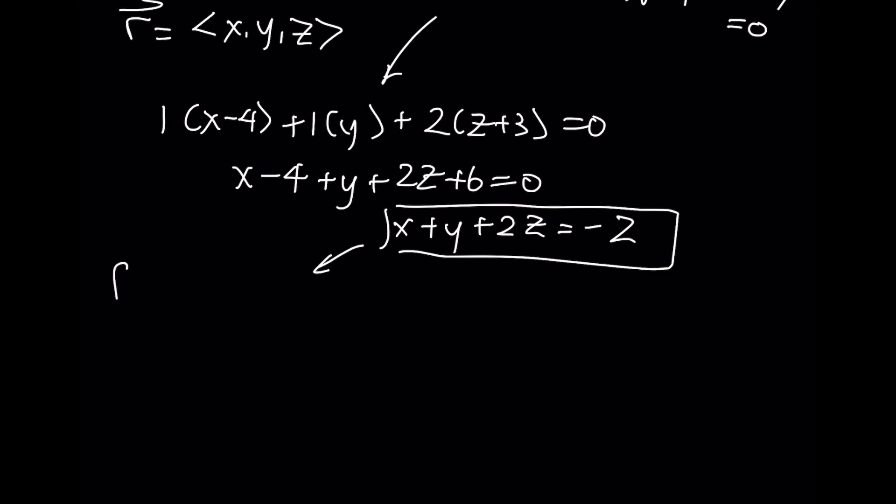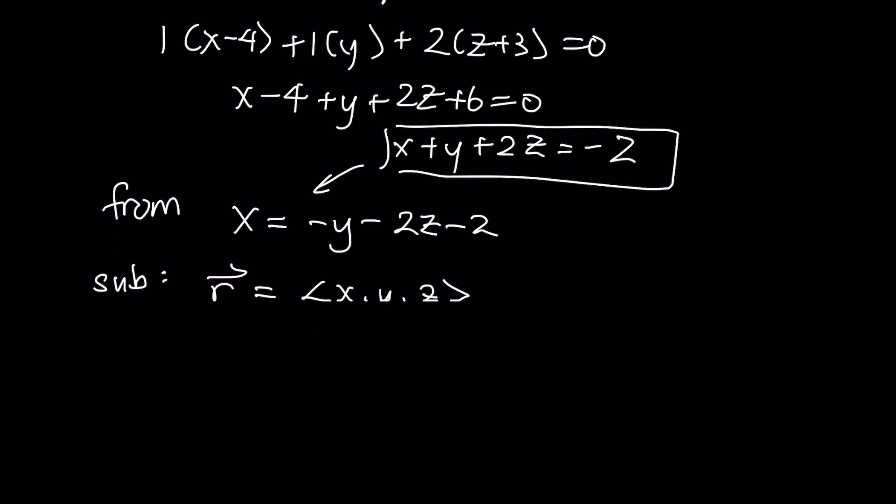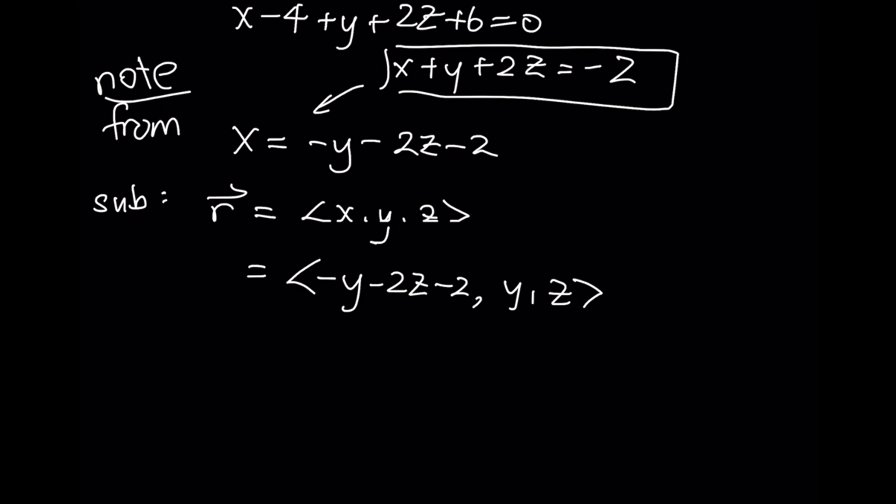From this scalar equation, I could always take this scalar equation and solve for one of the letters. For example, if I wanted to isolate X, I'd have X = -Y - 2Z - 2. If I substitute this back into the position vector <X, Y, Z>, what that is now going to give me is <-Y - 2Z - 2, Y, Z>.